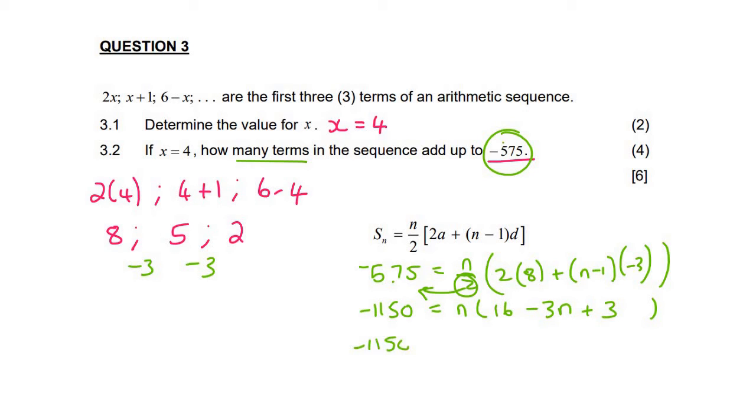And then I'm going to multiply the n into the bracket. So it'll become 16n minus 3n squared plus 3n.